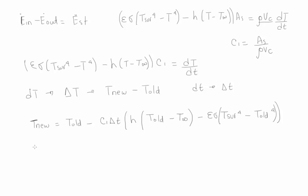For this progression, we start with the initial temperature of 25 Celsius. We use a delta time of 0.01 seconds. The temperature we need to reach is within 1 Celsius of the steady state condition. The steady state condition was 218.7 Celsius, so the target temperature is 217.7 Celsius, which is 1 Celsius before the steady state. We will now show how this process is done in MATLAB.